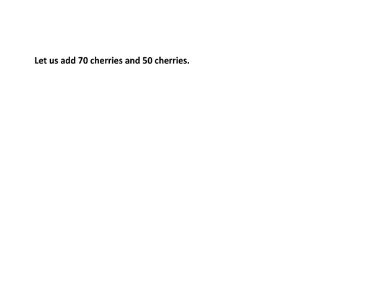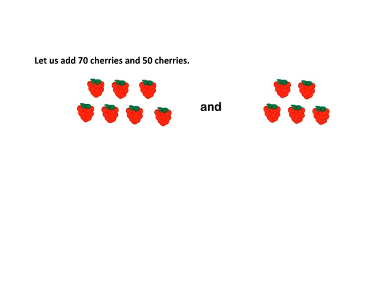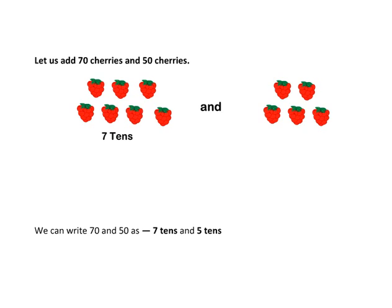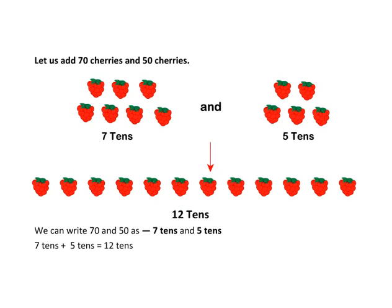Let us add 70 cherries and 50 cherries. We can write 70 and 50 as 7 tens and 5 tens. 7 tens plus 5 tens is equal to 12 tens.